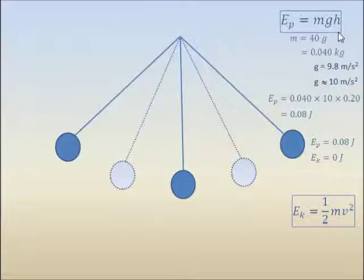g value approximately equals to 10. At the maximum height the potential energy equals to 0.08 joules. The kinetic energy equals to zero as the initial speed of the ball is zero.